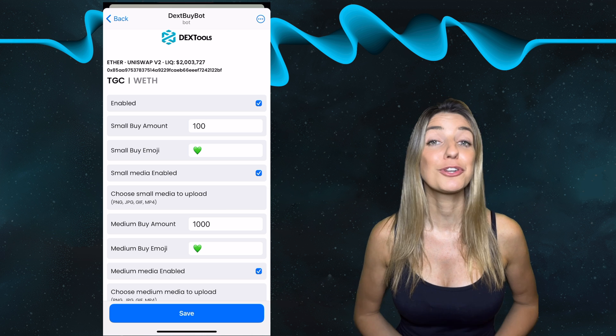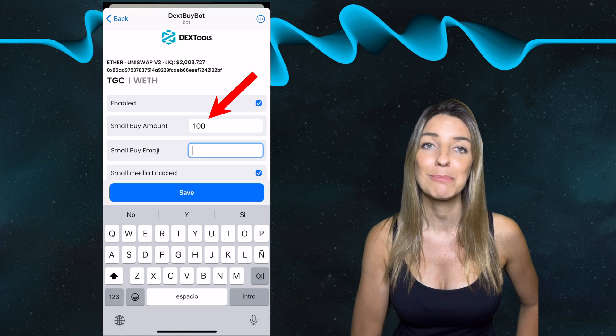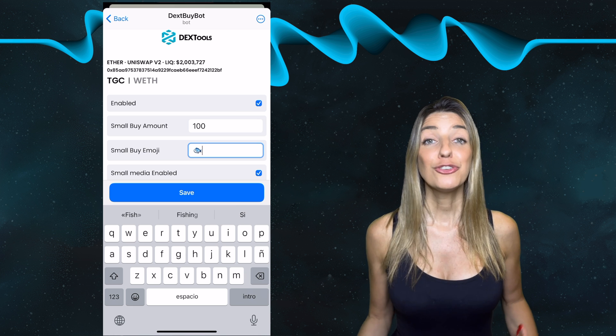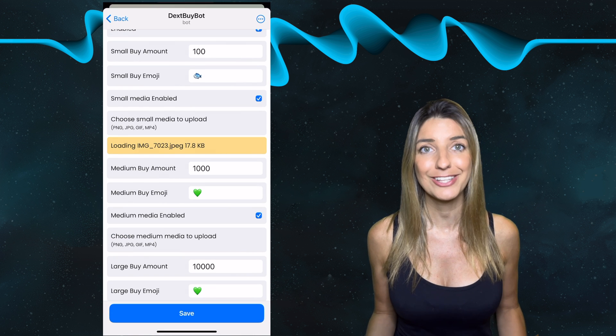Here you can set up graphics for different buy amounts. I have for example adjusted the minimum buy amount to $100. Choose emojis and media to show and then select which messages you want the bot to display in your group.